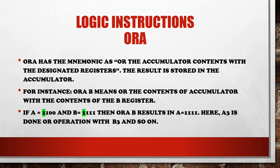If A equals 1100 and B equals 1111, then ORA B results in A equals 1111. Here A3 is ORed with B3, as shown by the green color, and likewise A2 is ORed with B2, and so on. This is all about the ORA logical instruction of SAP 2.